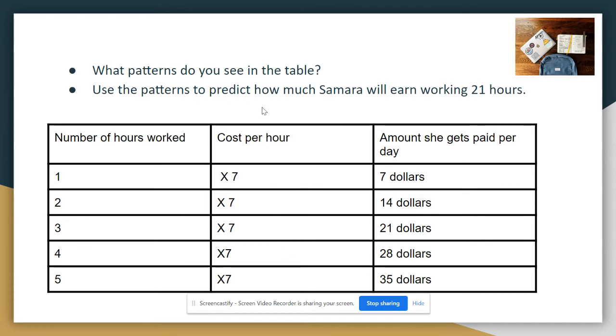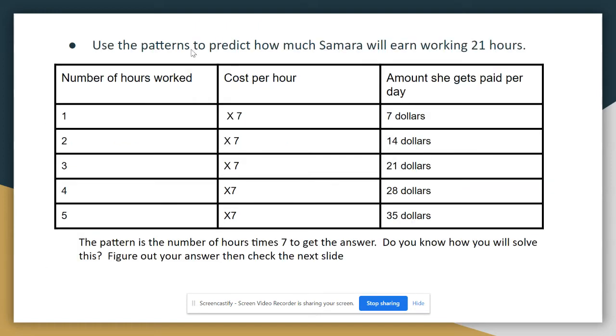We're going to use these patterns to predict how much Samara is going to earn in 21 hours. So we know the pattern is the number of hours times seven. So the number of hours worked times seven and you get your answer. Figure out your answer and press pause to do that. And then press play to see if you got the right answer.